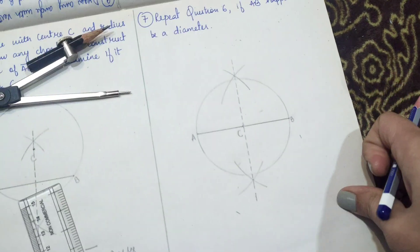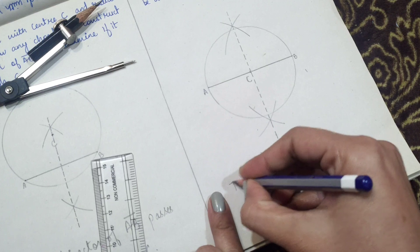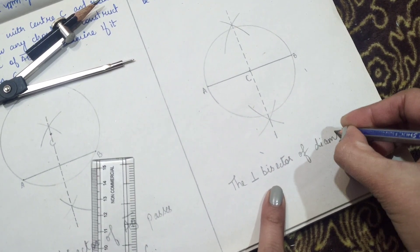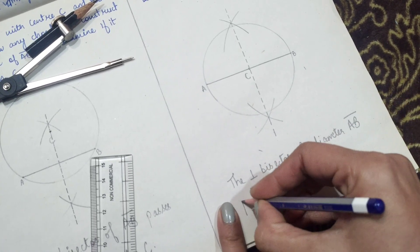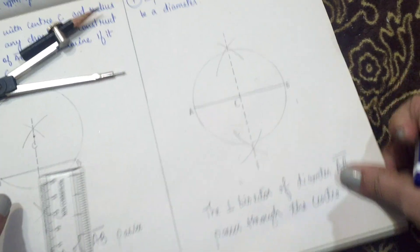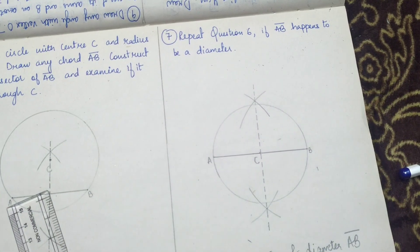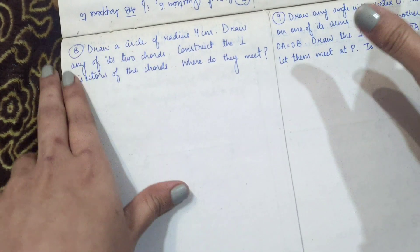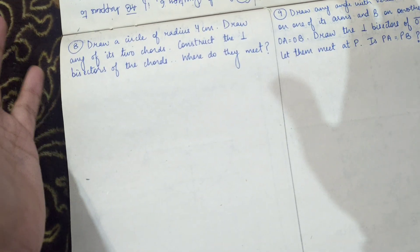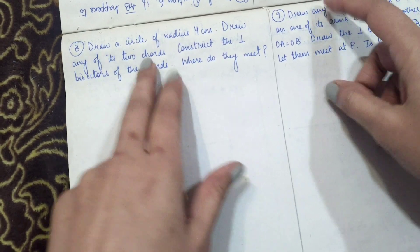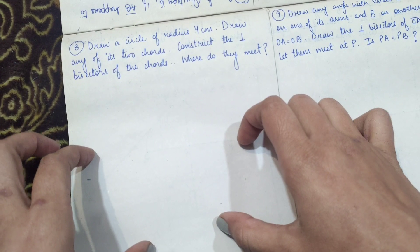Write: the perpendicular bisector of diameter AB passes through the center C. Question seven is done. Now question eight: draw a circle of radius 4 centimeters, then draw any two of its chords. Construct the perpendicular bisectors of both chords and determine where they meet.